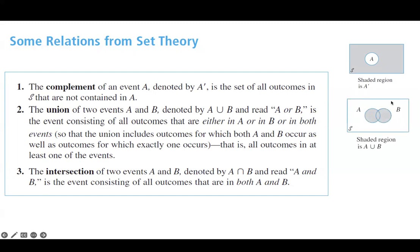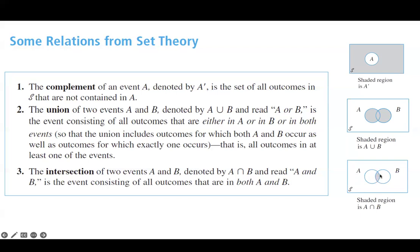If you take two sets, two events, and find their union, you're going to shade everything in A, in B, and the intersection. A intersection B just includes the little shaded area, which is the intersection or common elements between A and B.